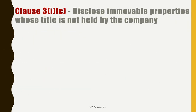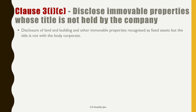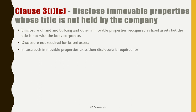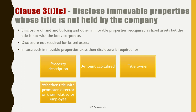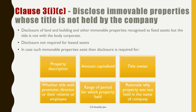There are three new clauses pertaining to fixed assets. First among them is clause 1C. It requires disclosure of immovable properties which are recognized as fixed assets of the company but whose title is not held by the company. If an entity has obtained an asset on lease, then the disclosure is not required. In case such immovable properties exist, disclosure is required for property description, amount capitalized, title owner, whether title is with promoter, director, or their relative or employee, range of period for which property is held, and rationale why property was not held in the name of the company.